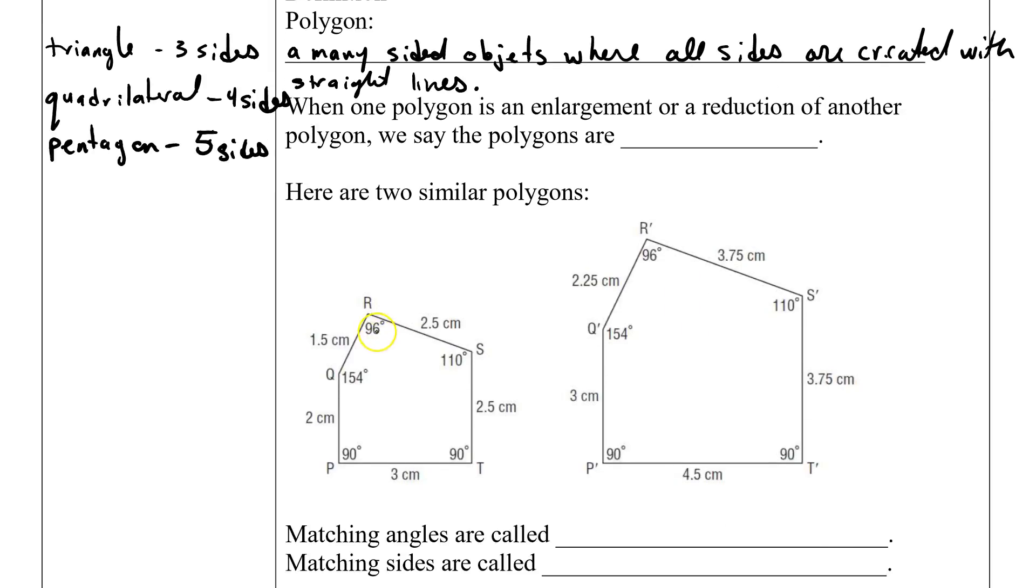Now this right here that we're going to be focusing on, this has one, two, three, four, five sides, which means it's a pentagon. But when I think of a pentagon, this is the shape that I think of.